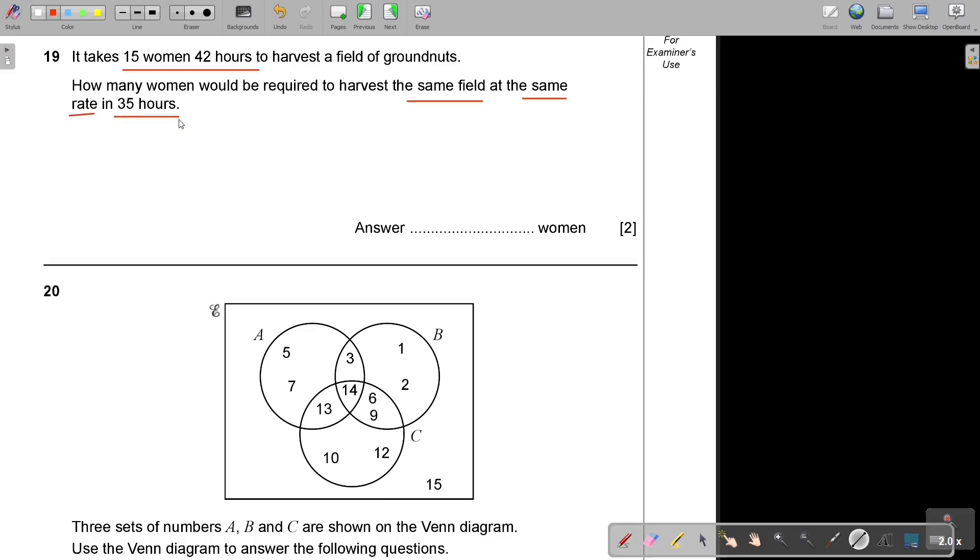Don't just go for direct proportion. Think. It's the same field. It took 15 women 42 hours. Now they make the hours less. So what will happen? They must put in more women. So the one goes down, then the woman must go up, and that's indirect proportion.